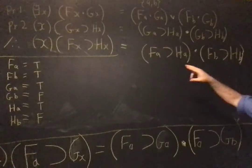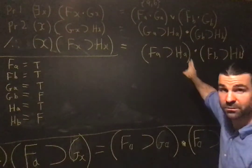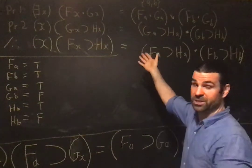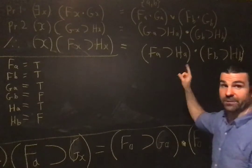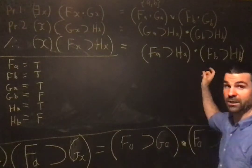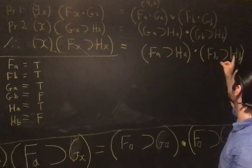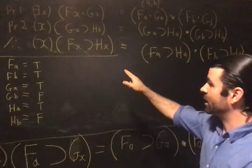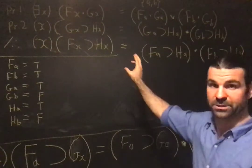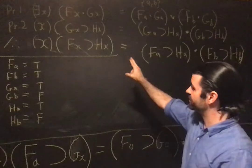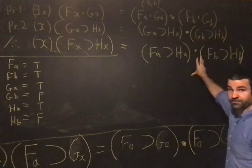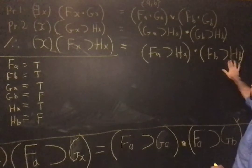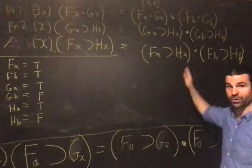So that's the rewriting of that one. Premise two is a universal statement, so it turns into a conjunction. Universal becomes a conjunction. Everything is such that if it's g, then it's h. All g's are h, so two things are true. If a is g, then a is h, and also if b is g, then b is h. The conclusion is all f's are h. So that turns into a conjunction, a universal conjunction. If a is f, then a is h, and if b is f, then b is h. So there's a change in form.